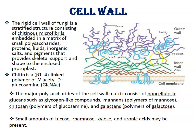Major polysaccharides of the cell wall matrix consist of non-cellulosic glucans: beta-1,3-glucan and beta-1,6-glucan. Also present is mannan — a polymer of mannose — chitosan, a polymer of glucosamine, and galactan, a polymer of galactose. Small amounts of fucose, rhamnose, xylose, and uronic acid may also be present in the cell wall.